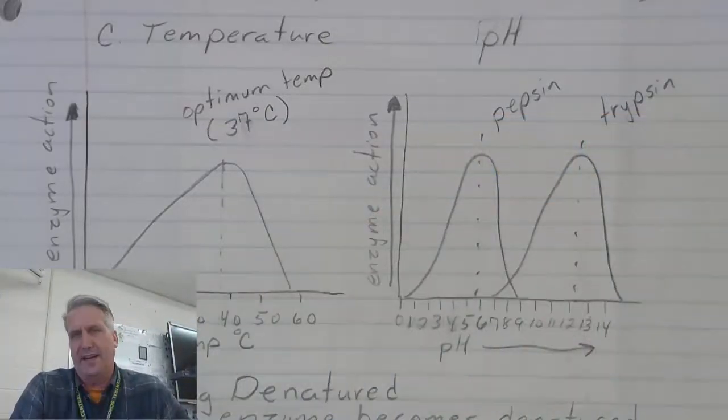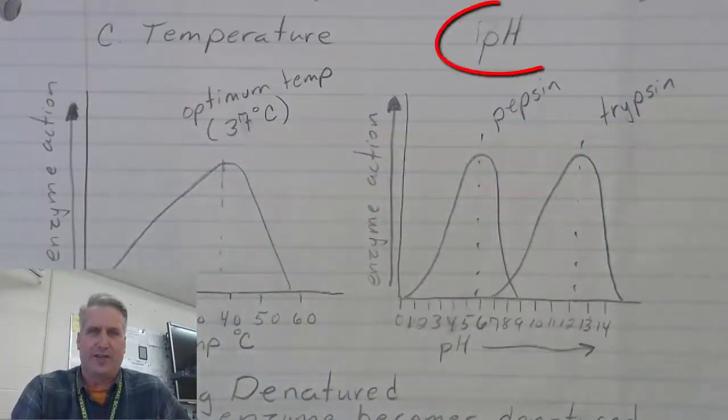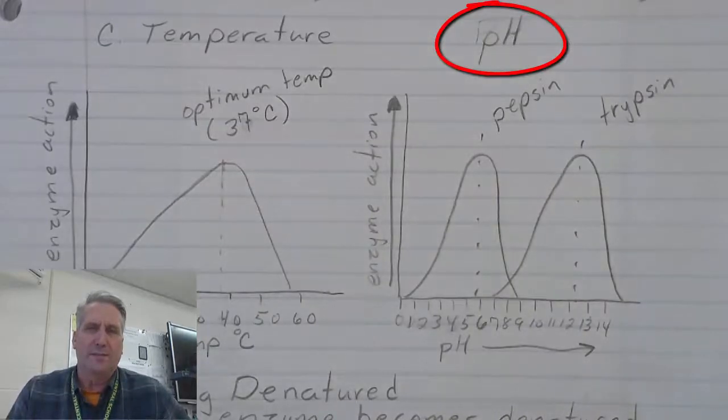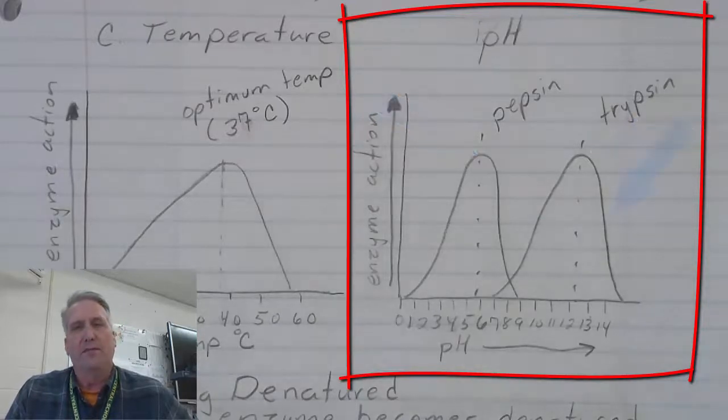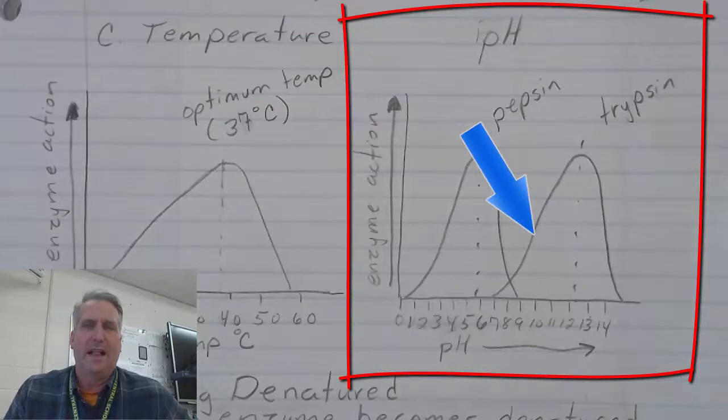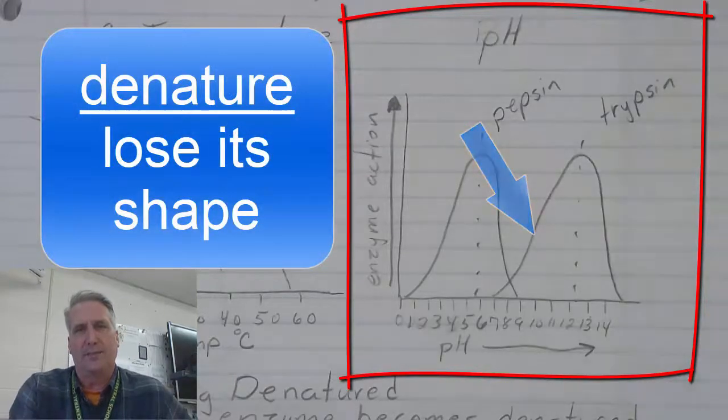The last factor that affects enzyme action is pH. Every enzyme works best at an optimal pH. Pepsin and trypsin are two different enzymes that work best at different pHs. If you go above the optimal pH or below the optimal pH, then the reaction rate drops off because the enzyme begins to denature and lose its shape.